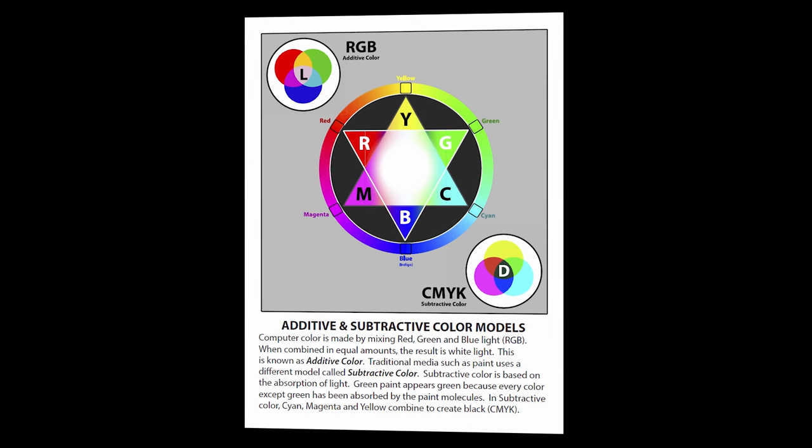Moving on to the next page, we can take a look at the difference between additive and subtractive color models. Computer color is made by mixing red, green, and blue light. This is known as RGB. When combined in equal amounts, the result is white light. This is known as additive color.